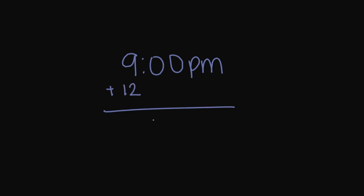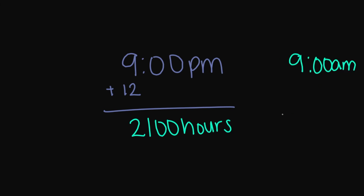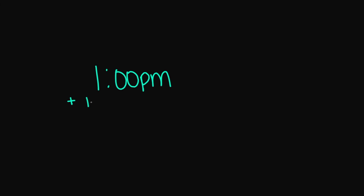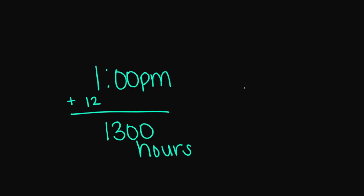What about 9 p.m.? We're going from regular to military time, so I'm going to add 12, and this is going to equal 2100 hours. Remember, if it's 9 a.m., we're going to get 0900 hours. Let's try 1 p.m. — from regular to military, I'm going to add 12, giving us 1300 hours. And if you had 1 a.m., military time is going to be 0100 hours.